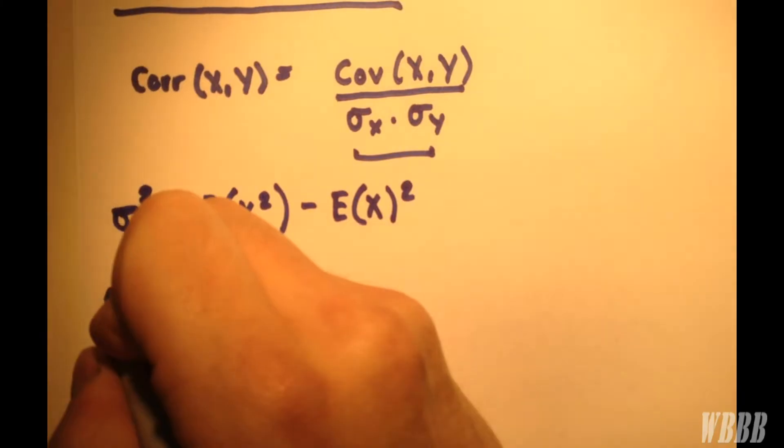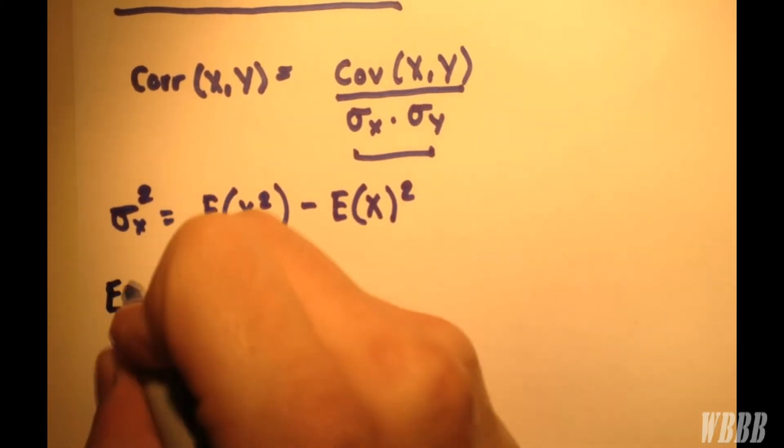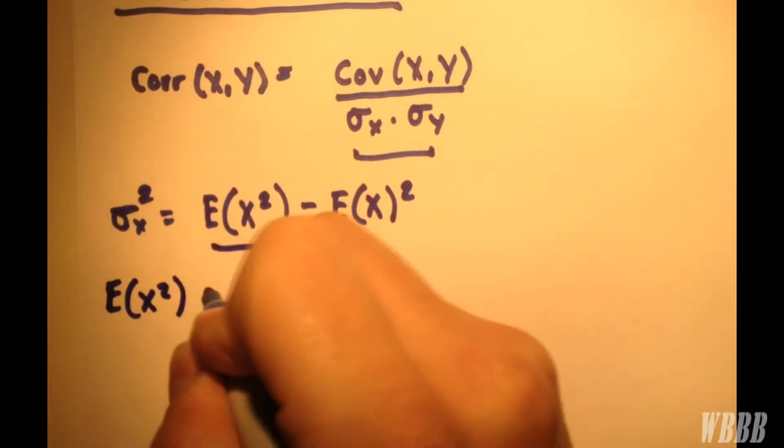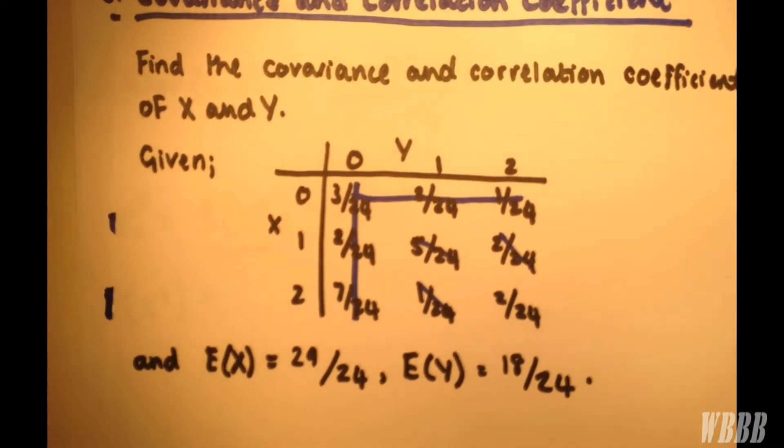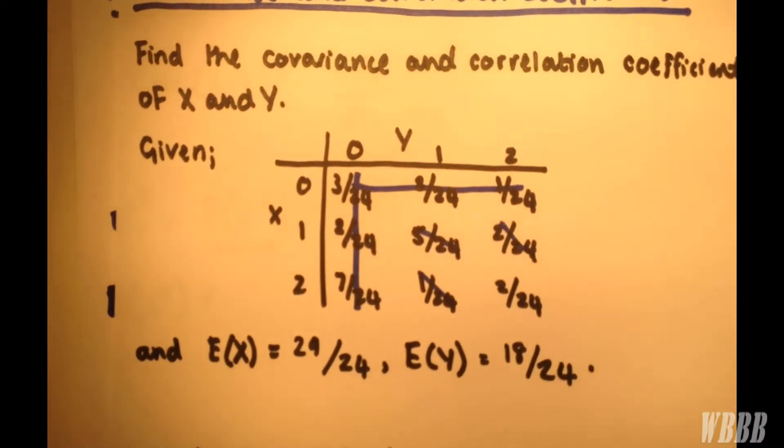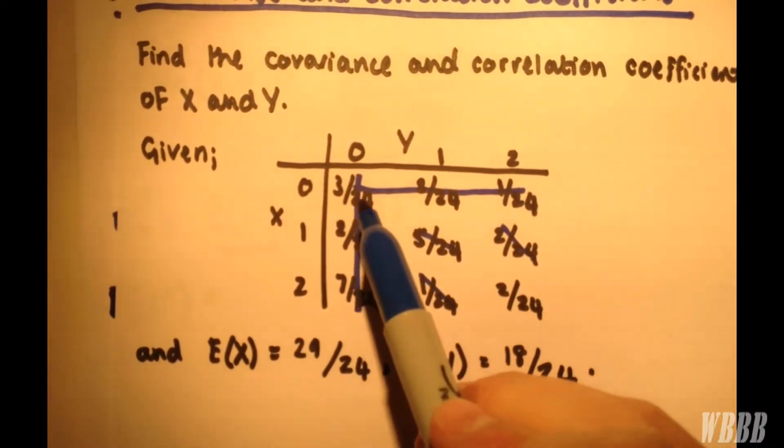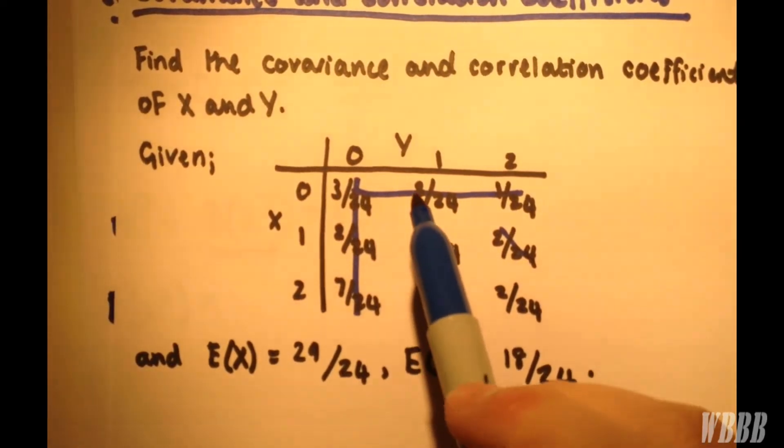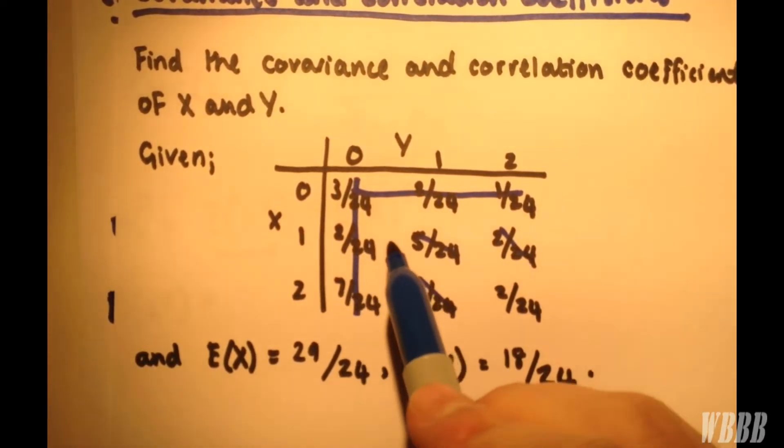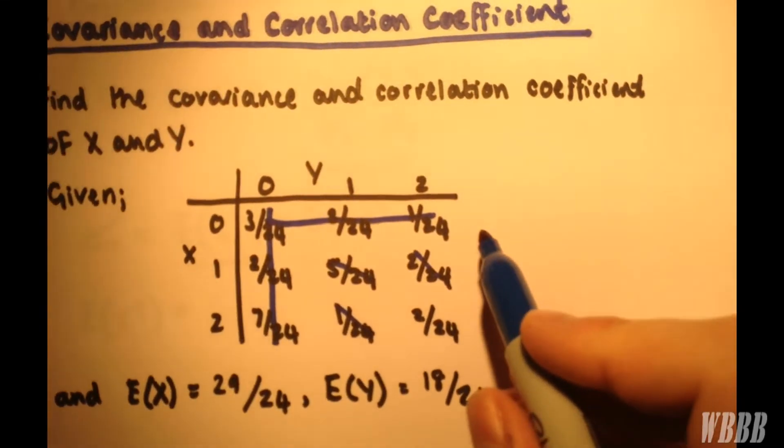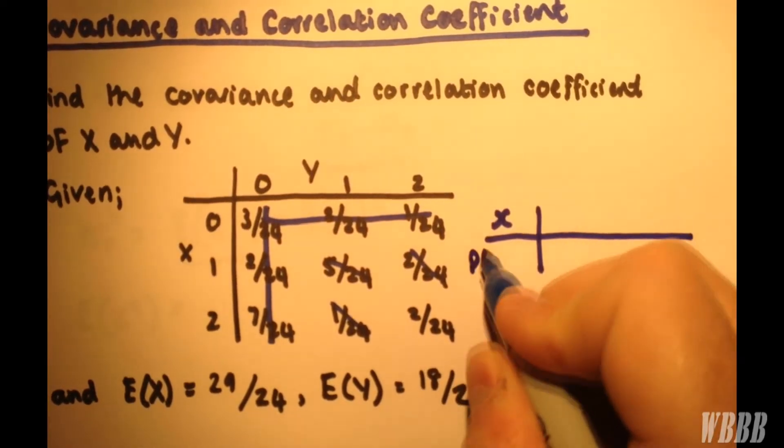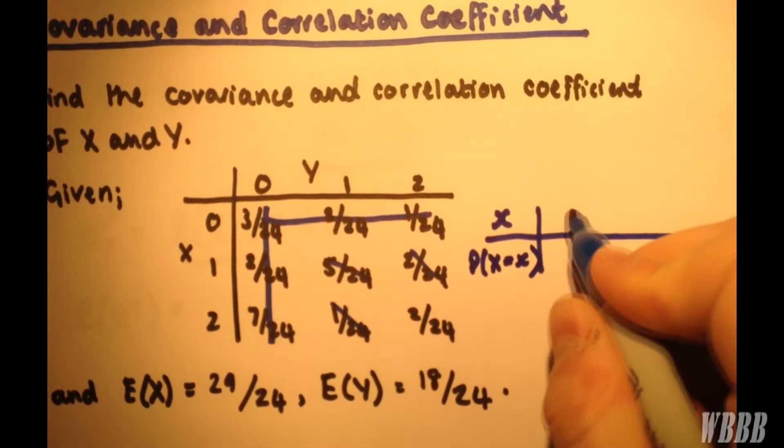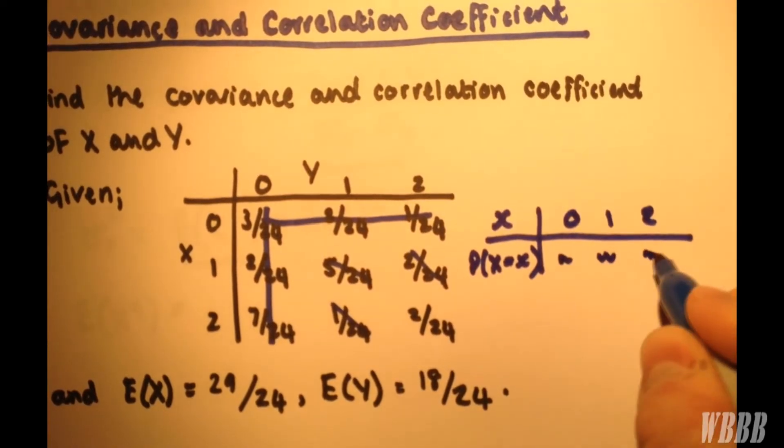So quickly, let's do the expected value of X squared. So very simply, to do this, all we need to do is concern ourselves with... In our first video, we created a marginal probability distribution table. So if we have X, and probability X equal to x: 0, 1, 2, with something here, something here, something here.